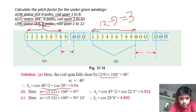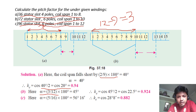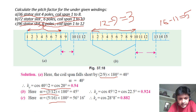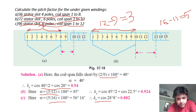For 96 stator slots, 6 poles, and coil span 1 to 12: 96 ÷ 6 = 16 slots per pole. For a full-pitch coil, the coil span will be 16 slots; that is, if a coil starts from slot 1, it will finish at slot 17. But the given coil span is 1 to 12, giving a span of 11. The coil is short-pitched by 16 − 11 = 5 slots. So α = (5/16) × 180° = 56°16'. Kc = cos(56°16' / 2) = 0.8282.